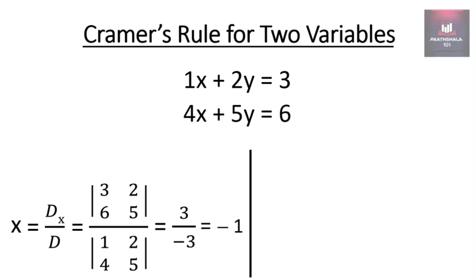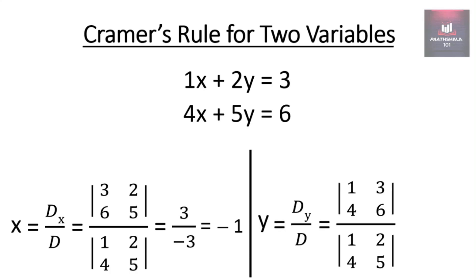For getting the value of y: y = Dy/D, equal to the determinant of [1, 3; 4, 6] divided by the determinant of [1, 2; 4, 5]. For solving this second-order determinant, you can refer to the link provided in the description which explains how to solve second-order determinants. On solving this determinant you get -6 divided by -3, which equals 2.